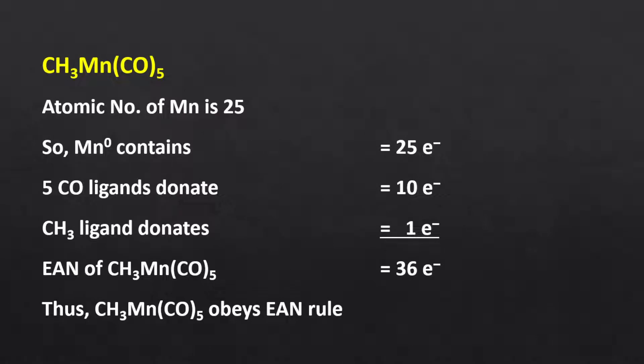Consider the example of penta carbonyl methyl manganese. The atomic number of manganese is 25 and there is no charge on the complex, so the oxidation state of manganese is 0. That means manganese will contribute 25 electrons. Each carbonyl ligand will donate 2 electrons, so overall 10 electrons from 5 carbonyl ligands. The methyl ligand is a 1 electron donor. Consequently, the effective atomic number of penta carbonyl methyl manganese is 36.